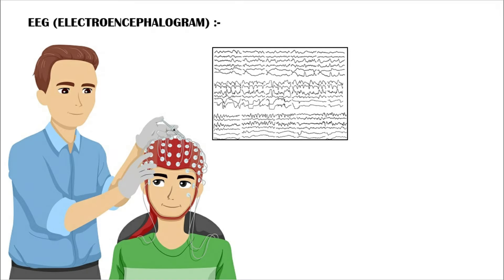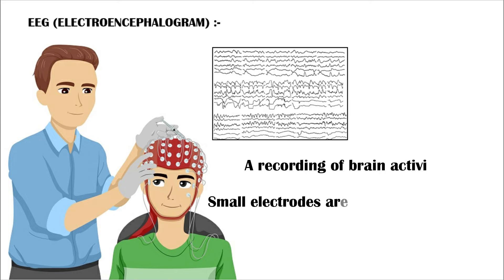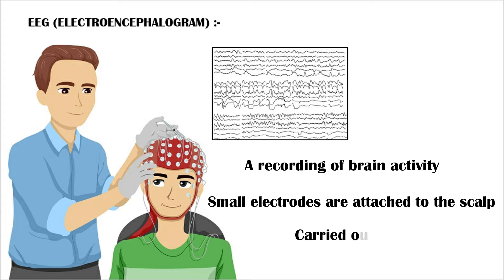An electroencephalogram, or EEG, is a recording of brain activity. During the test, small electrodes are attached to the scalp to pick up electrical signals from the brain. These signals show up as wavy lines on an EEG recording. This procedure is usually carried out by a highly trained specialist called a clinical neurophysiologist.